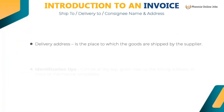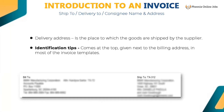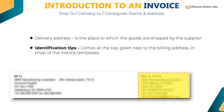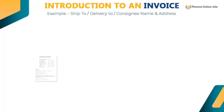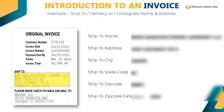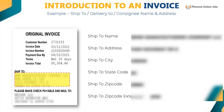Delivery address is the place to which goods are shipped by the supplier, also called ship to or consignee name and address. It comes at the top, next to the billing address, in most invoice templates. Example: ship to name: BMW Manufacturing CO LLC, ship to address: 1400 Highway 101S, ship to city: Greer, ship to state code: SC, ship to zip code: 29651, extension: 6731.